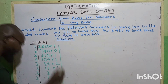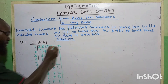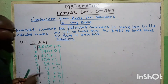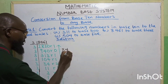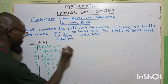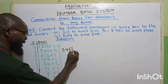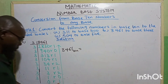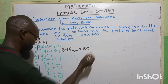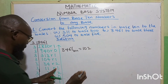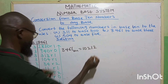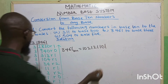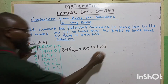So we move from bottom up. We are going to have 8461 base 10 equals to 1021101 in base 3.